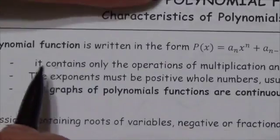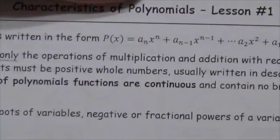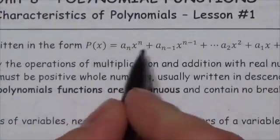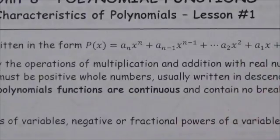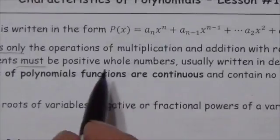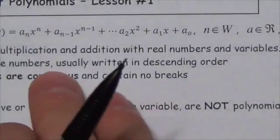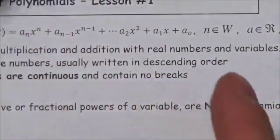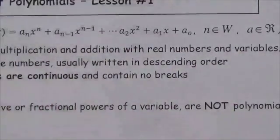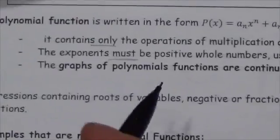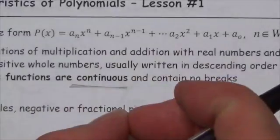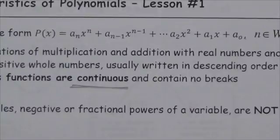It's important to understand that a polynomial contains only the operations of multiplication and addition with real numbers and variables. You might see subtraction, but we think of that as adding a negative. The exponents must be positive whole numbers, usually written in descending order — you'll want to rearrange if not. The graphs of polynomial functions are continuous: no breaks, no jumps, no holes — just smooth lines continuously connected.